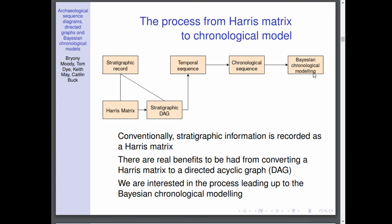Conventionally stratigraphic data is held in a Harris matrix, but for chronological modelling it's really useful to convert this information into a directed acyclic graph. I will explain what one of them is in a minute, but first I'm just going to go through the process. We're interested in this process leading up to it, the first four boxes.